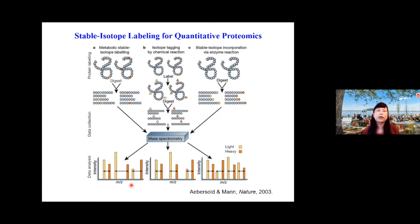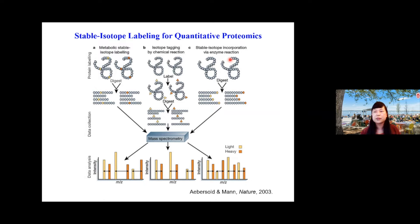Today we're going to spend more time on stable isotope labeling for quantitative proteomics. There are three different major categories. One is metabolic labeling, where you culture cells or feed animals with heavy isotopes — this happens at the very beginning of the protein extraction workflow. Another is isotope tagging by chemical reaction, which can happen at either the protein level or the peptide level. A third strategy, used a little less now, is stable isotope incorporation during enzymatic reactions — for example, digesting in the presence of heavy water (O18) to generate tryptic peptides with C-terminal heavy isotopes.